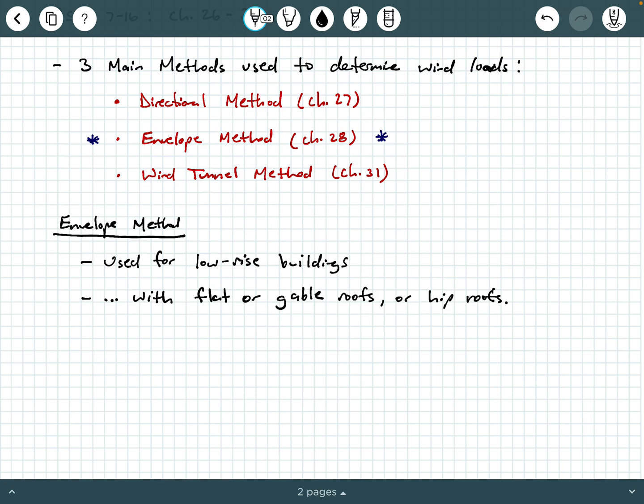As we get into this envelope procedure, I want to define a couple of terms. If you have an enclosed structure with a gable roof that may look something like this. With a gable roof, it looks something like that. A gable roof is characterized by two slopes, a slope on either side of a common high point in the roof. This is like a profile view of a gable-framed system.